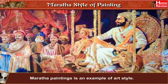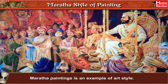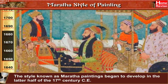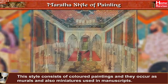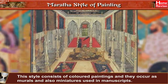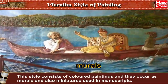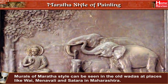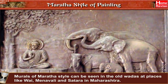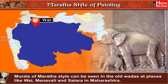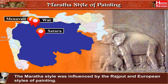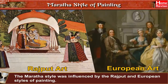Maratha paintings are an example of art style. The style known as Maratha paintings began to develop in the latter half of the 17th century CE. It consists of colored paintings occurring as murals and also as miniatures used in manuscripts. Murals of the Maratha style can be seen in old wadas at places like Wai, Main Valley, and Satara in Maharashtra. The Maratha style was influenced by the Rajput and European styles of painting.